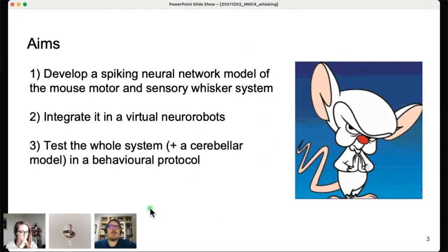The aims of our work: we wanted to develop a spiking neural network model of the mouse motor and sensory whisker system to give a tool, a network that can be integrated with other models, especially to provide inputs that can be more realistic in their encoding features. Then we integrated this model to control a virtual robot, giving a body to the sensory whisker system. Finally, we tested this whole system, we also added a cerebellar model as an example of how you can integrate this system to create a virtual experiment.